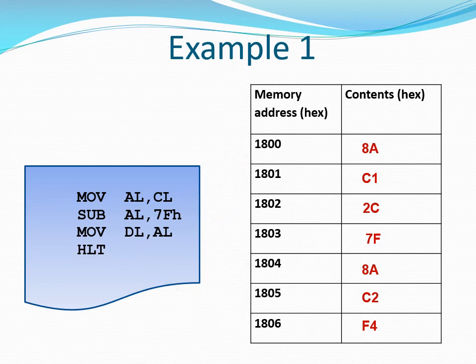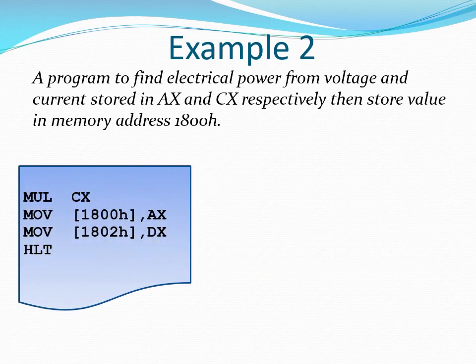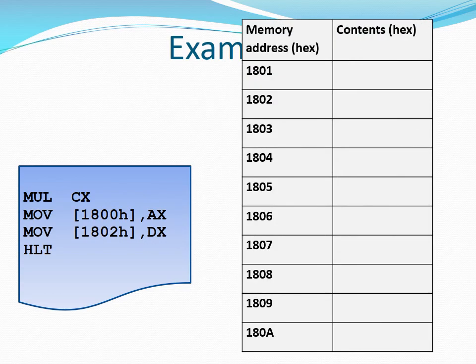So we have assembled the program and loaded it into memory. Each code for each instruction is obtained using the methods we used in lecture 8. Let us also apply the assembling process to the program for calculating electrical power. We would want to load the program into memory starting at address 1801h.